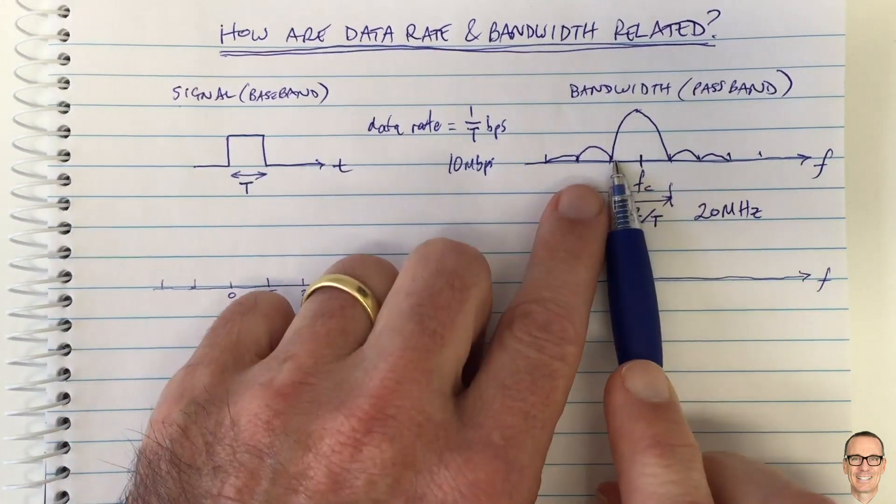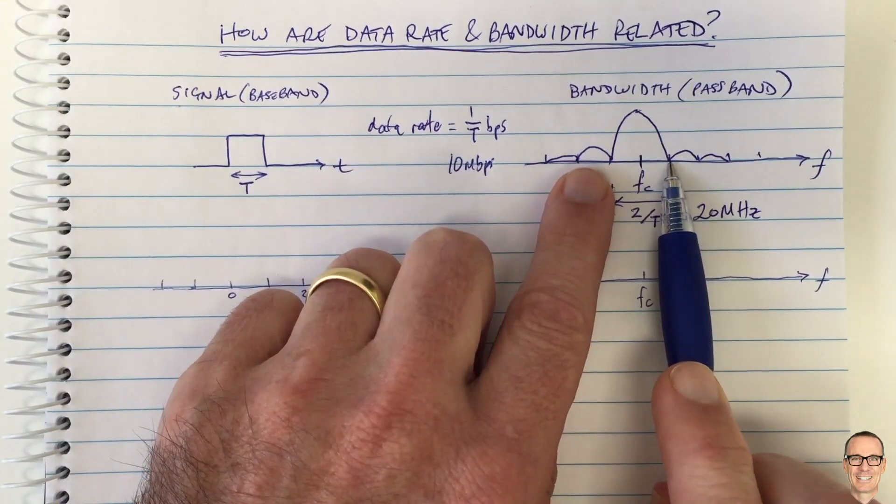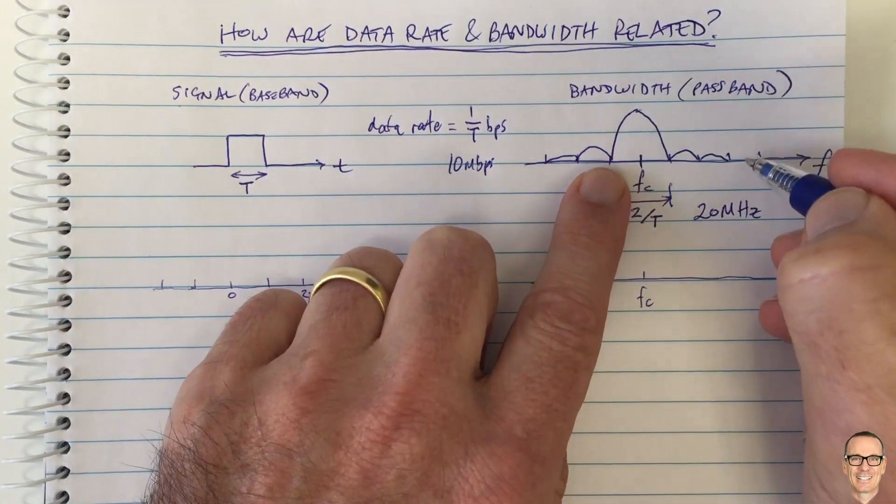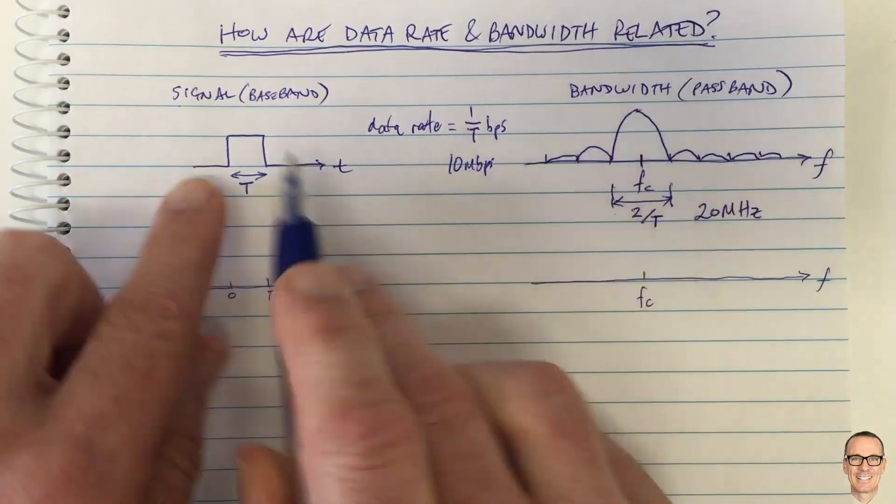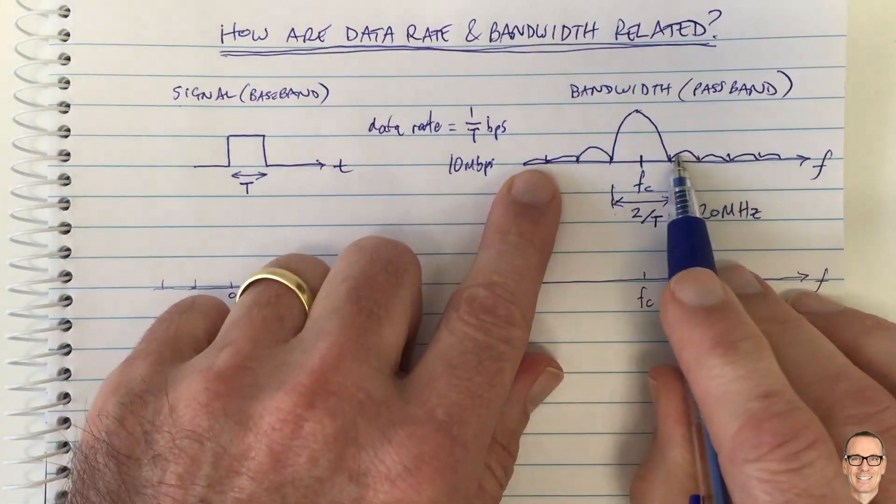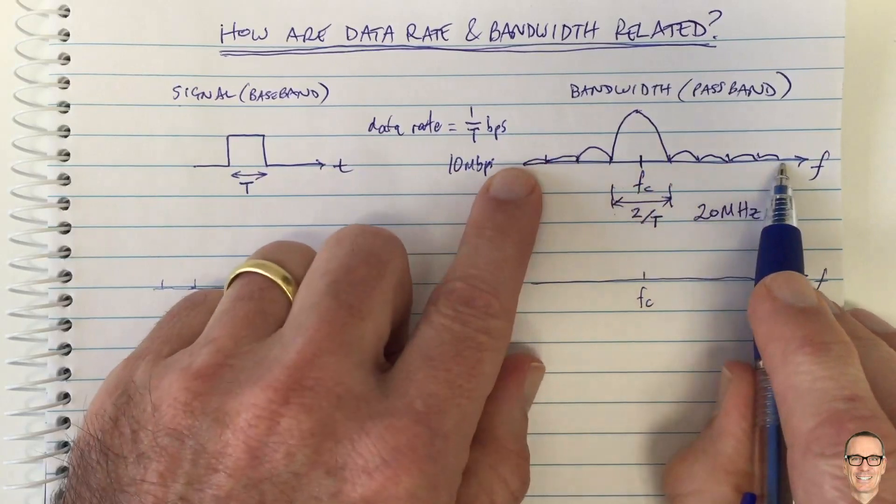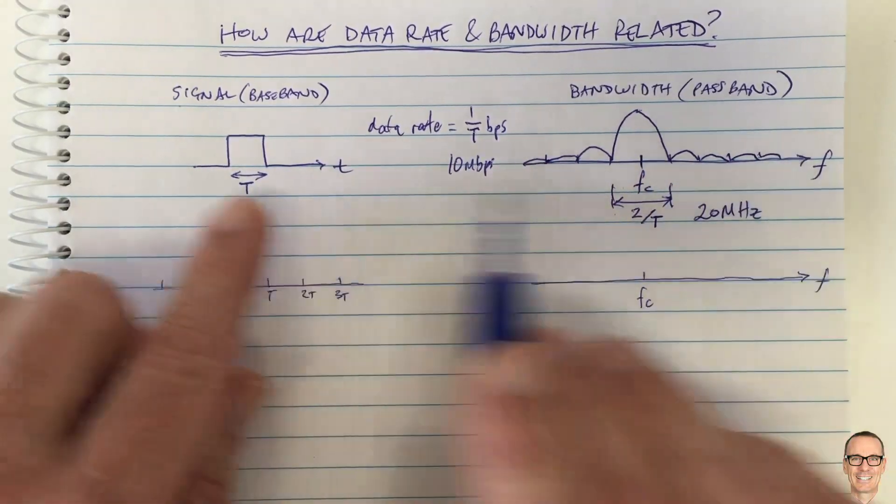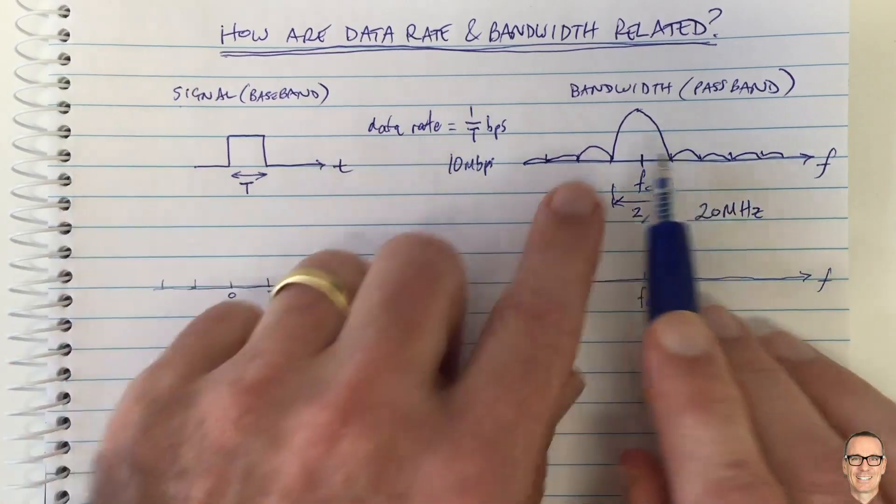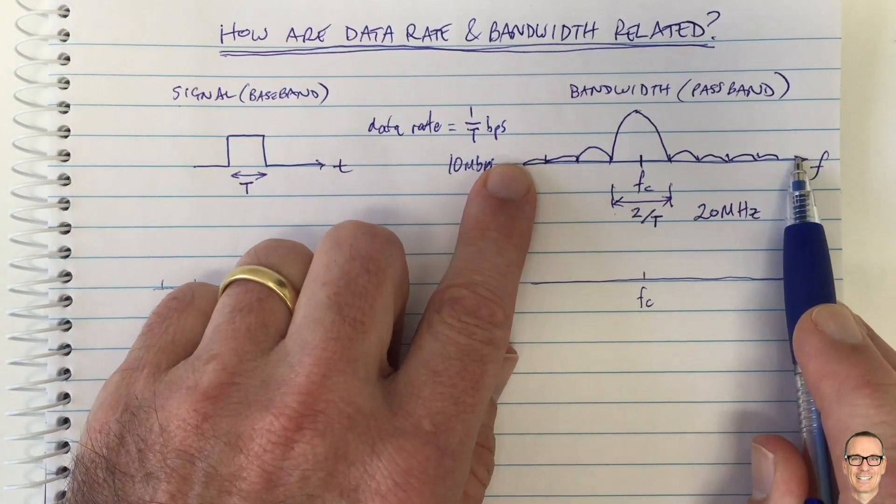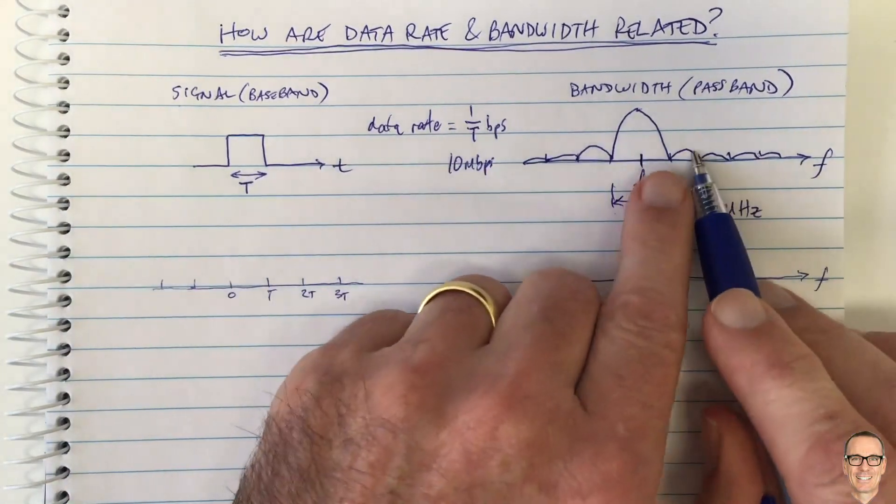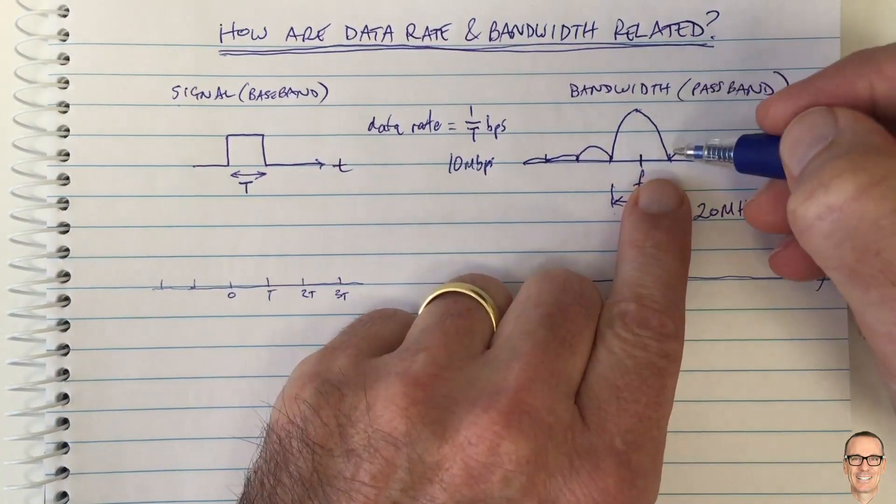To send this signal we would need 20 megahertz. Well, actually we would need more than that. To really send this exact signal, it turns on and off so fast. These small side lobes indicate you would need infinite frequencies if you were to really represent this sharply turning on and off.